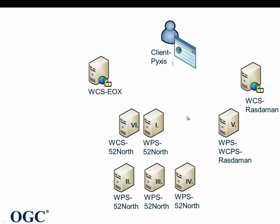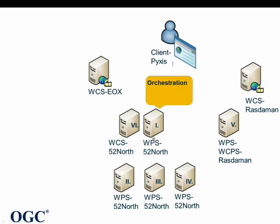How does a principal interaction look like? At first, a user selects and requests data either from the EOX WCS or the Rastaman WCS. With this data loaded into the Pixis client, the first WPS is called. This WPS is responsible for orchestrating in an opaque way a workflow which calculates drought areas.